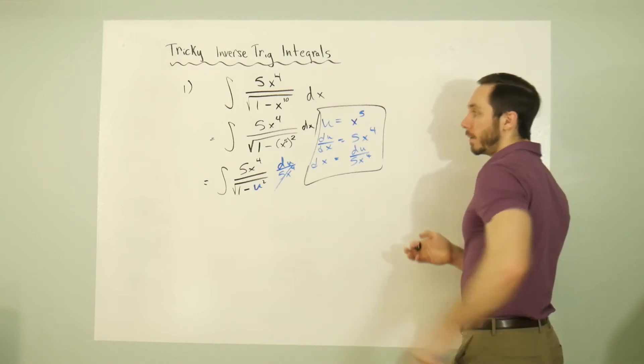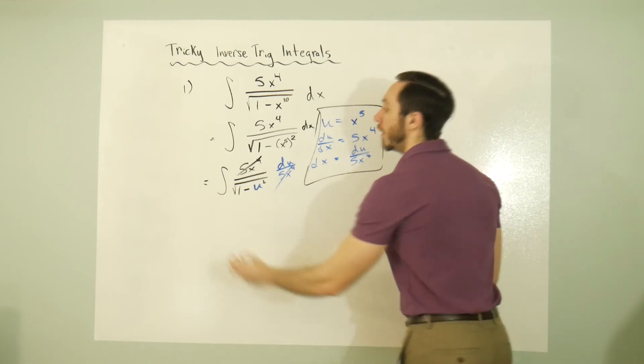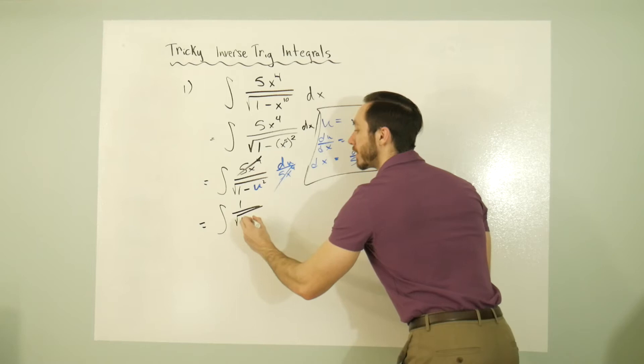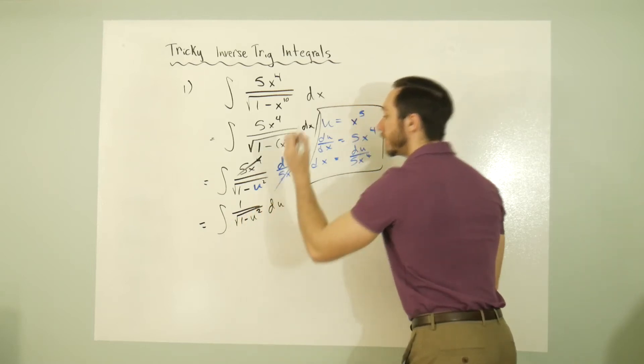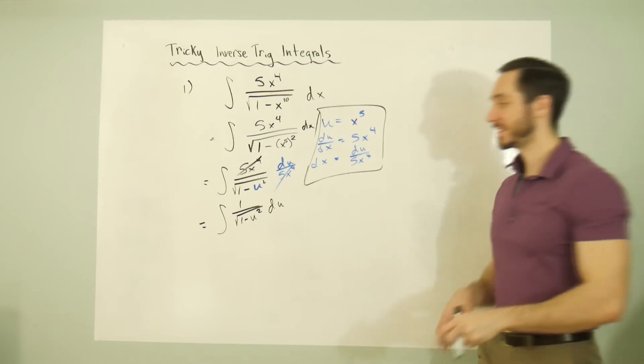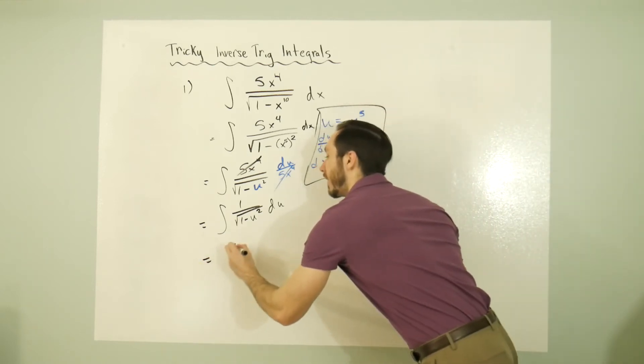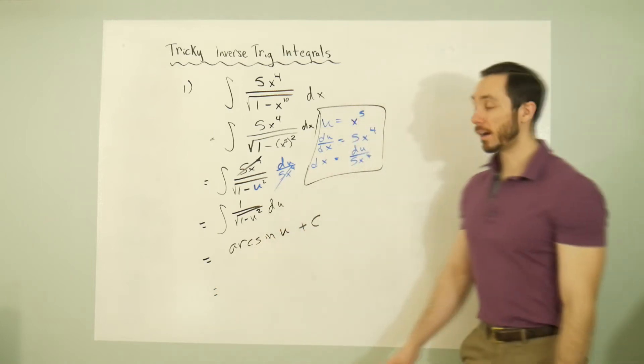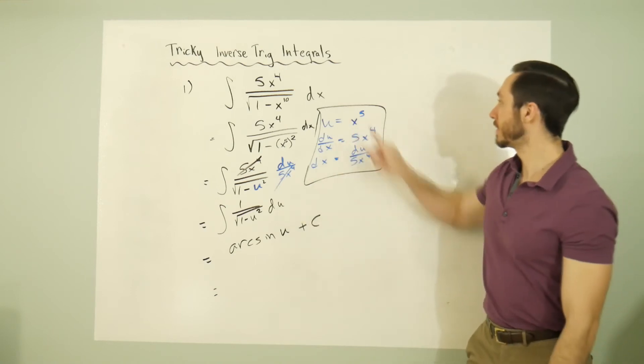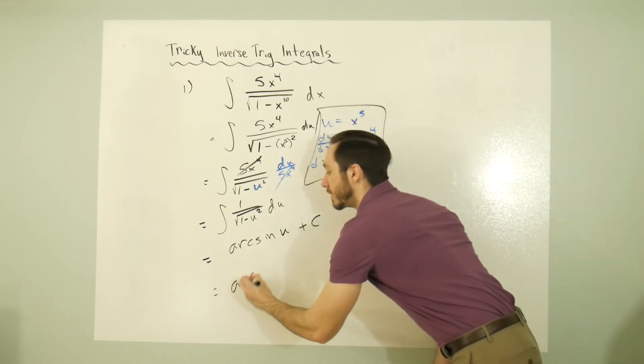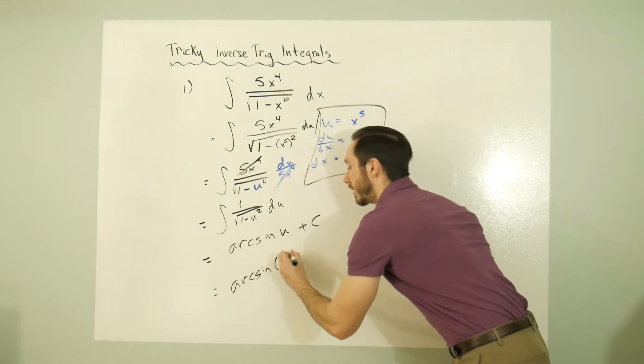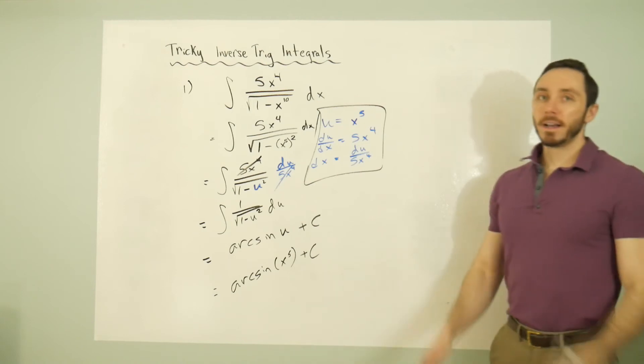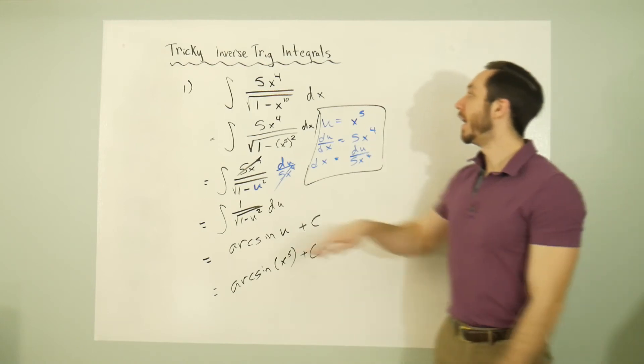We note that we now have a one up in the numerator when we convert to u world here, so it'll be one over the square root of 1 minus u^2 du. And that is arcsine. So I now have arcsine of u plus C. And what was u? Well, it was x^5. So this brings you to arcsine of x^5 plus C.